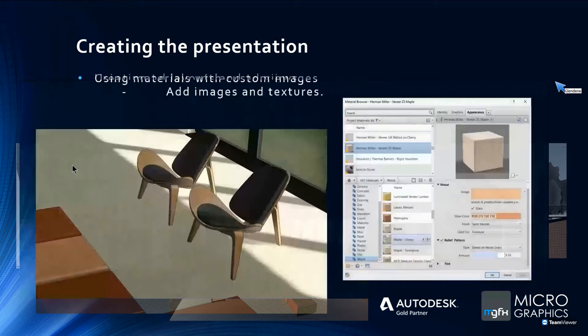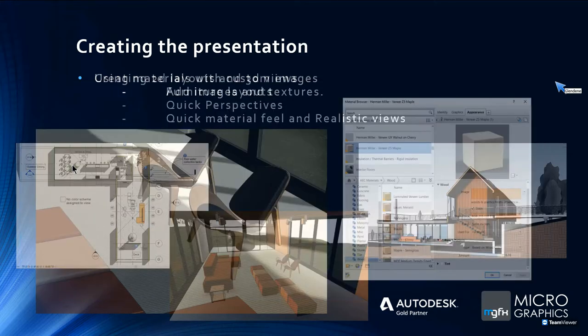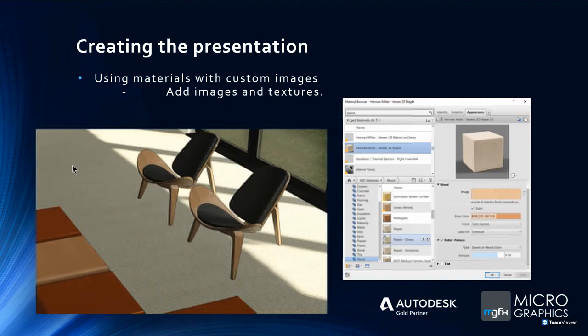Materials are also catered for in Revit. You can see textures on the carpet area and wood grain on the chairs. It allows you to add textures to your model very easily — basically like any other application. You create a material, as they call it in Revit, and apply it to the model. It caters for custom images too: you can take a picture of any kind of material, bring it in as a custom image into Revit, and use that for your presentation.